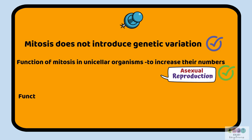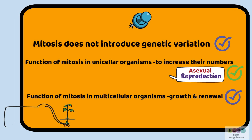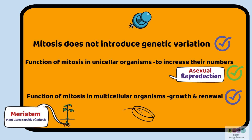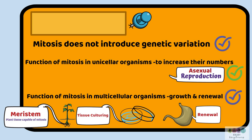The function of mitosis in multicellular organisms is growth and renewal. In plants, for example, plants will get taller and longer because there are meristems. A meristem is plant tissue capable of producing new cells by mitosis, found at the root tips and shoot tips. Mitosis is also the basis for tissue culturing. When you think of renewal, think of your stomach lining getting renewed every few weeks — this is by means of mitosis.